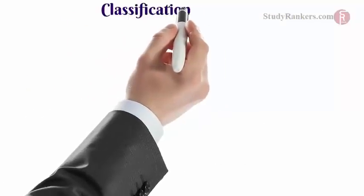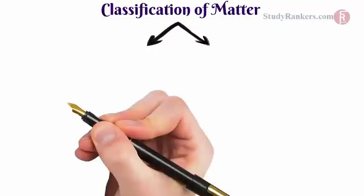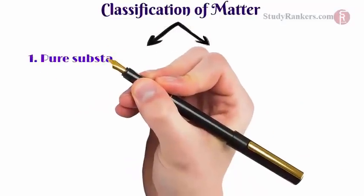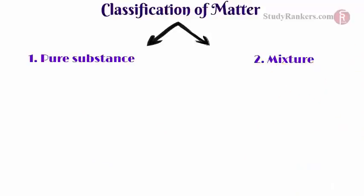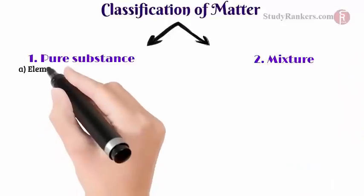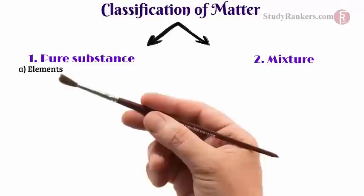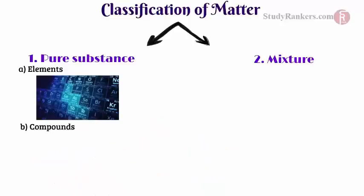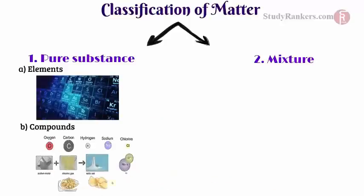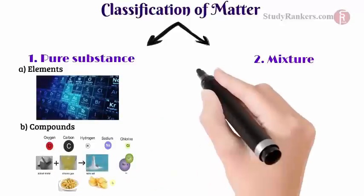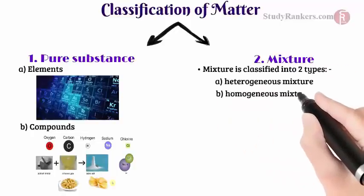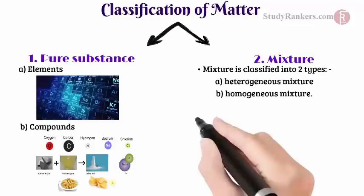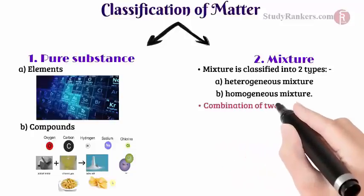According to chemical properties, matter is classified into two types: pure substances and mixtures. Pure substances are classified into two types which are elements and compounds. Also, mixtures are classified into two types: heterogeneous mixture and homogeneous mixture. We are going to start by describing mixture and its types.